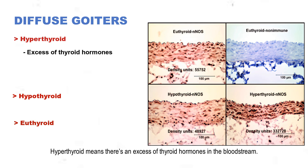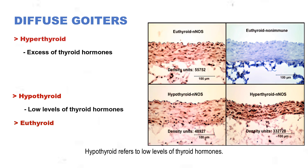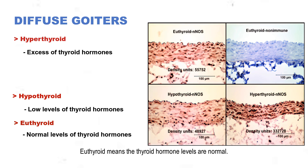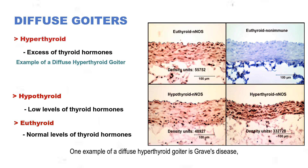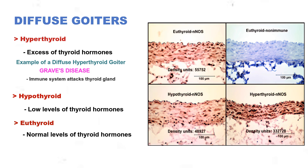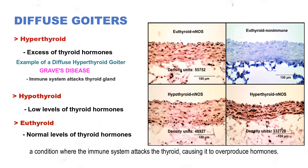Hyperthyroid means there's an excess of thyroid hormones in the bloodstream. Hypothyroid refers to low levels of thyroid hormones. Euthyroid means the thyroid hormone levels are normal. One example of a diffuse hyperthyroid goiter is Graves' disease, a condition where the immune system attacks the thyroid causing it to overproduce hormones.